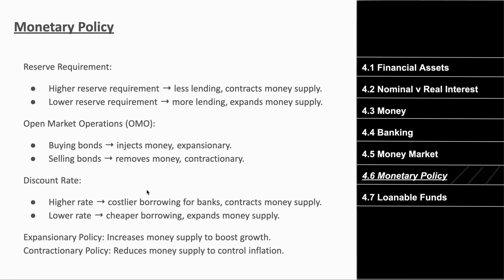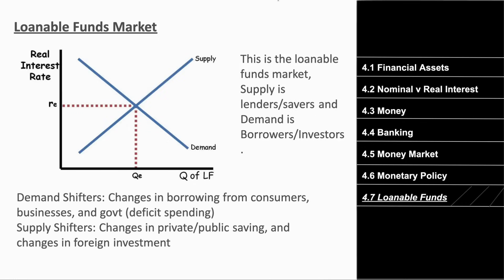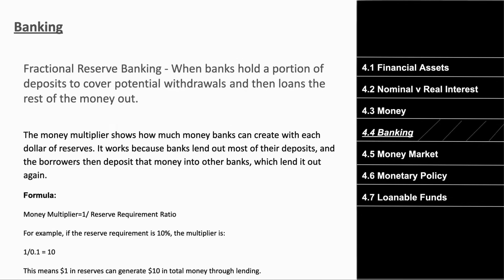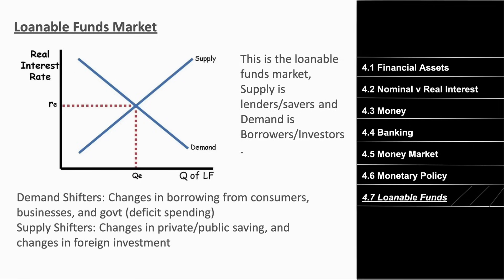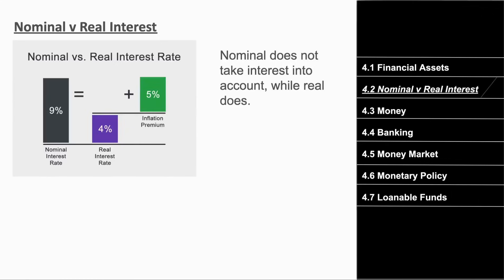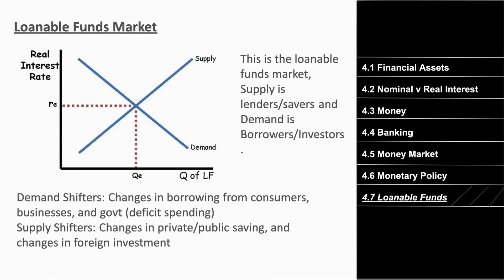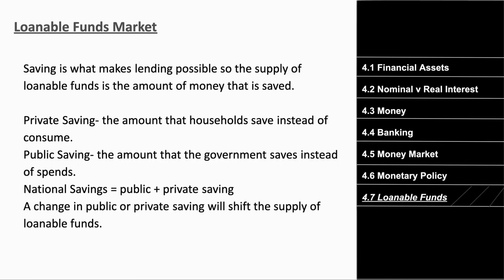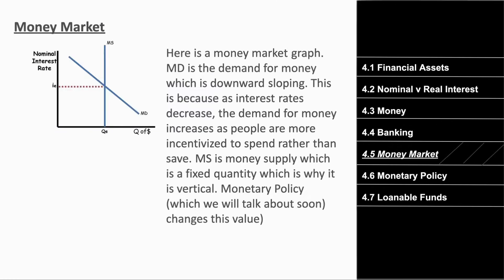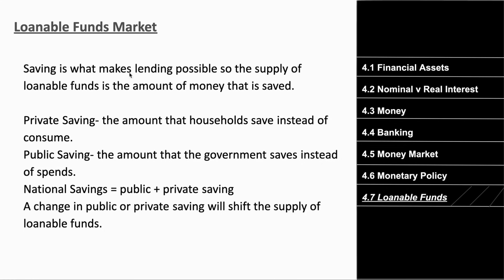You'll also need to understand open market operations and the discount rate in depth, and the loanable funds market with additional graphs not covered here. In the description link there are 18 to 20 practice problems covering everything discussed plus additional topics, with a full answer key at the bottom of the Google Doc to help you better understand each topic. This is a big unit for AP Macro.